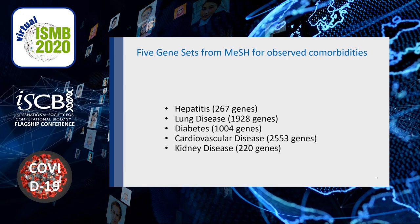Here are the five diseases that we selected: hepatitis, lung disease, diabetes, cardiovascular disease, and kidney disease. We chose five gene sets from MESH for our initial investigations, all from the same data source with a good number of genes to investigate. Submitting these genes to the combined gene sets analysis tool, we identified the shared genes across all five comorbidities.